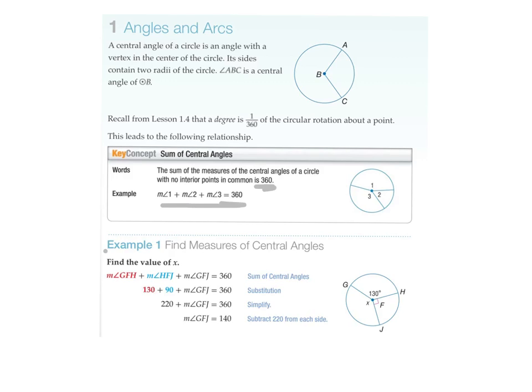So if you look at example number one, you've been given that GFH is 130. And H, F and J is 90 degrees by the notation. You've got to find X. We'll add together your 90 and 130 and subtract it away from 360. You're left with 140 degrees.